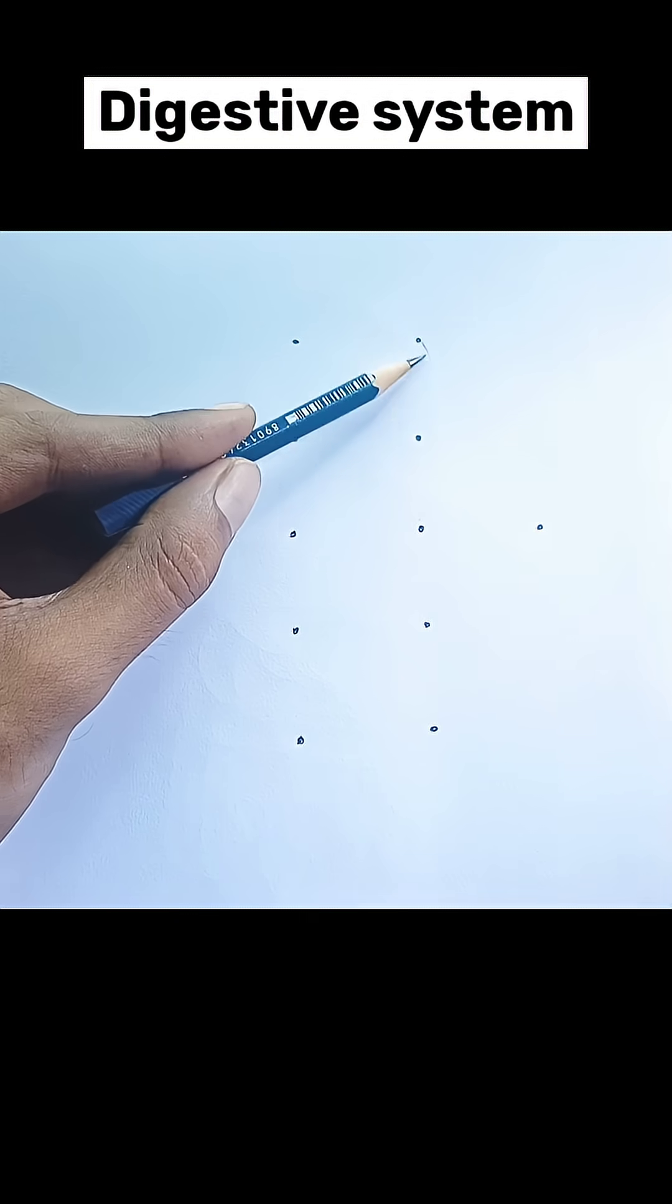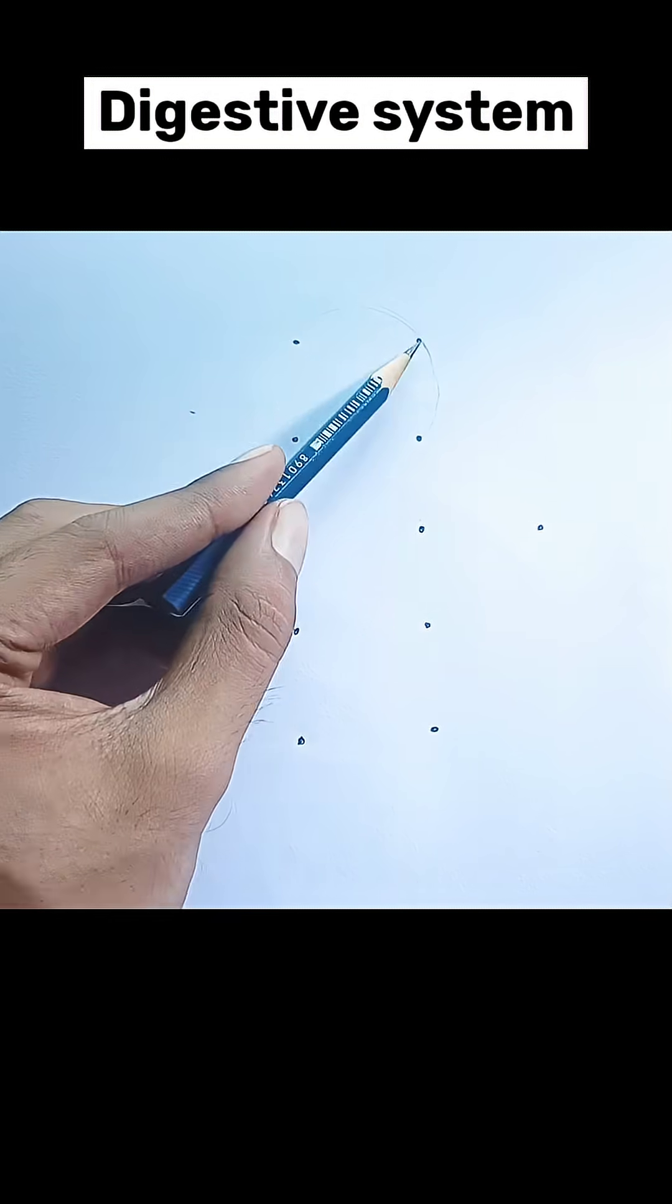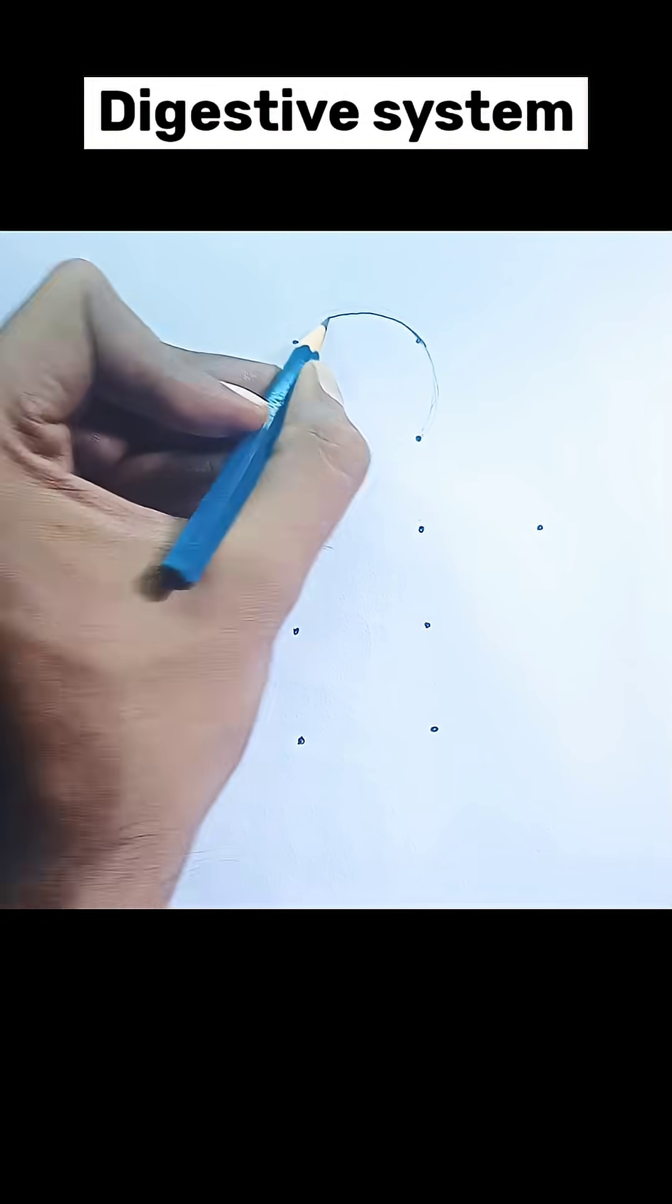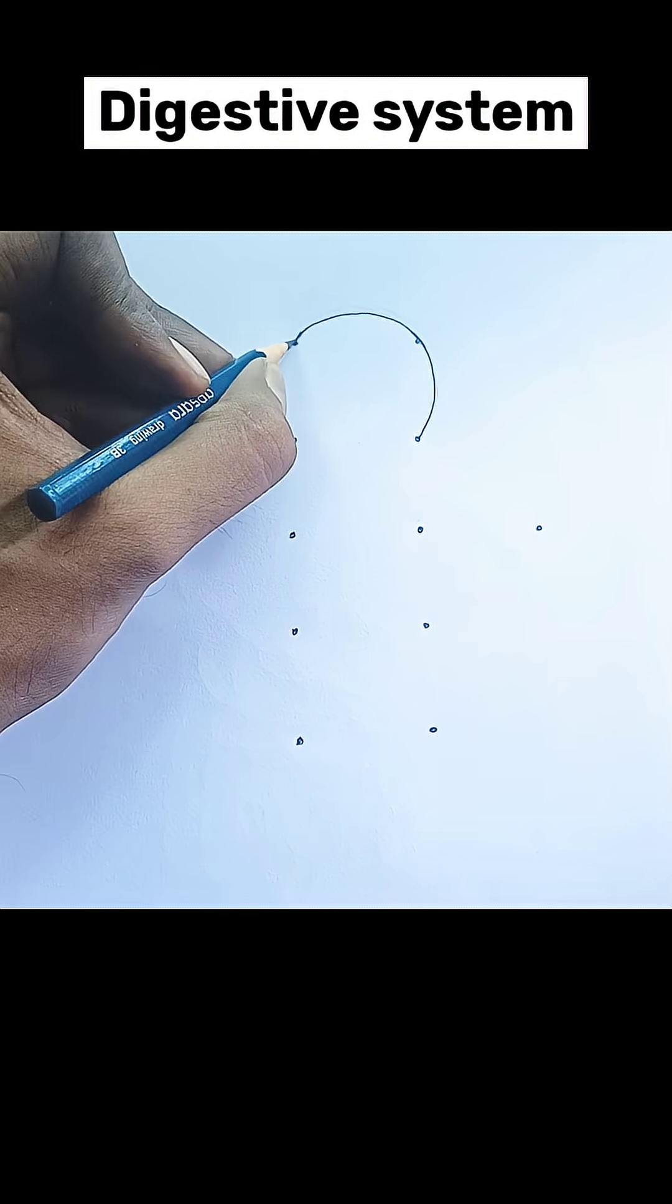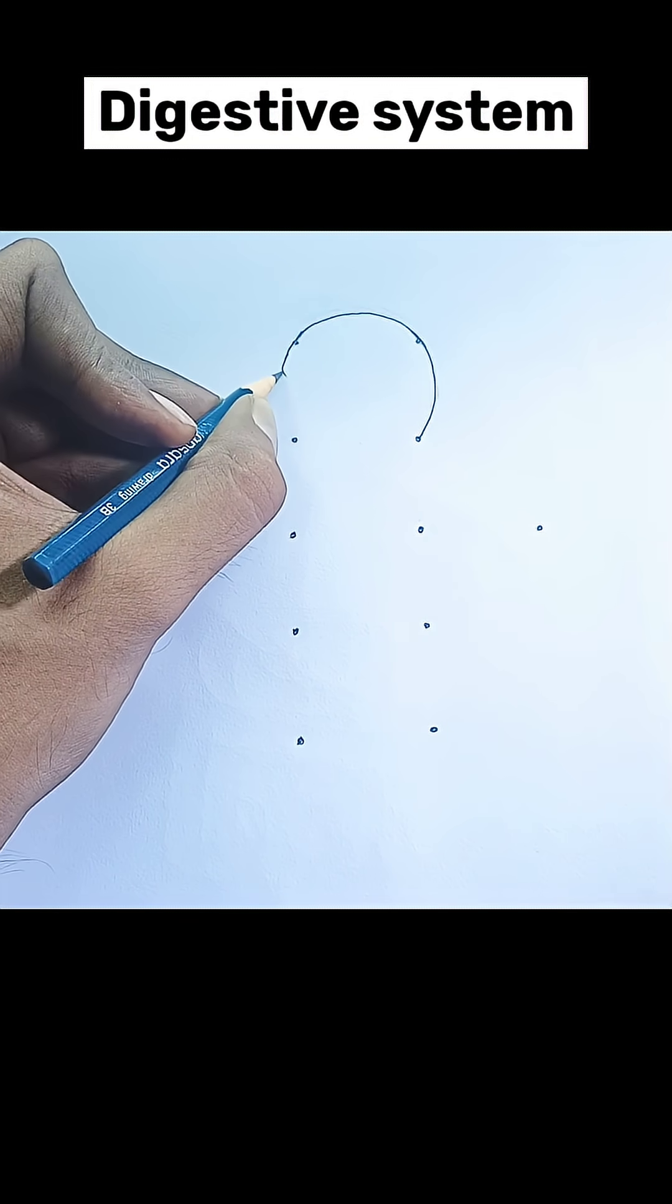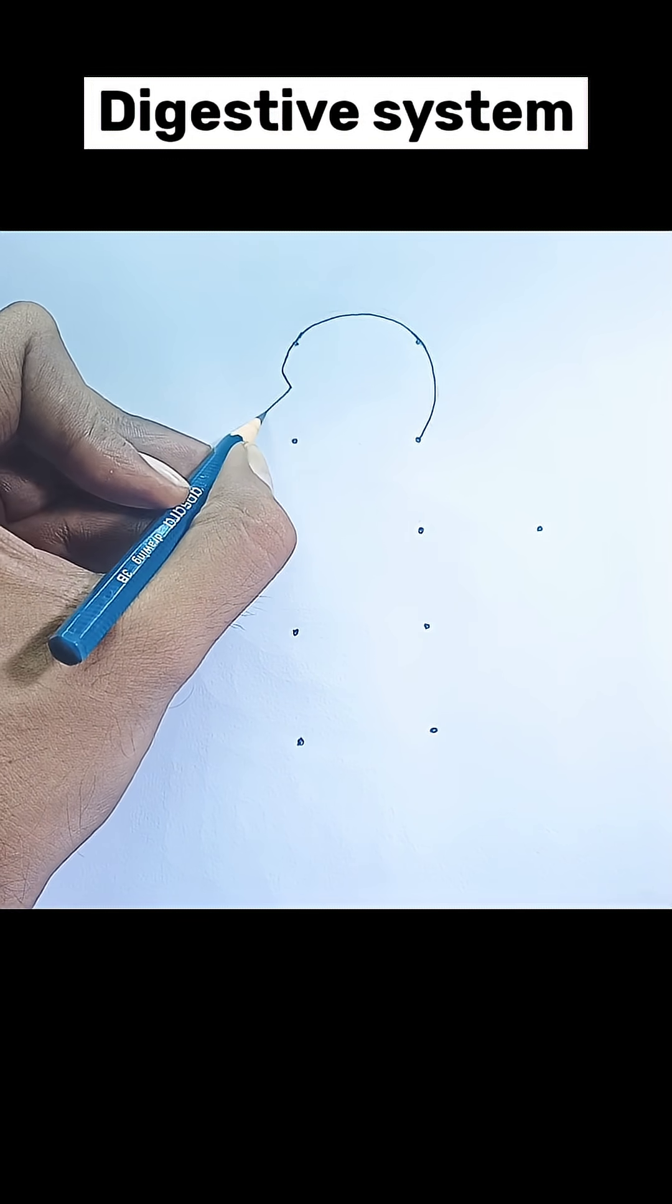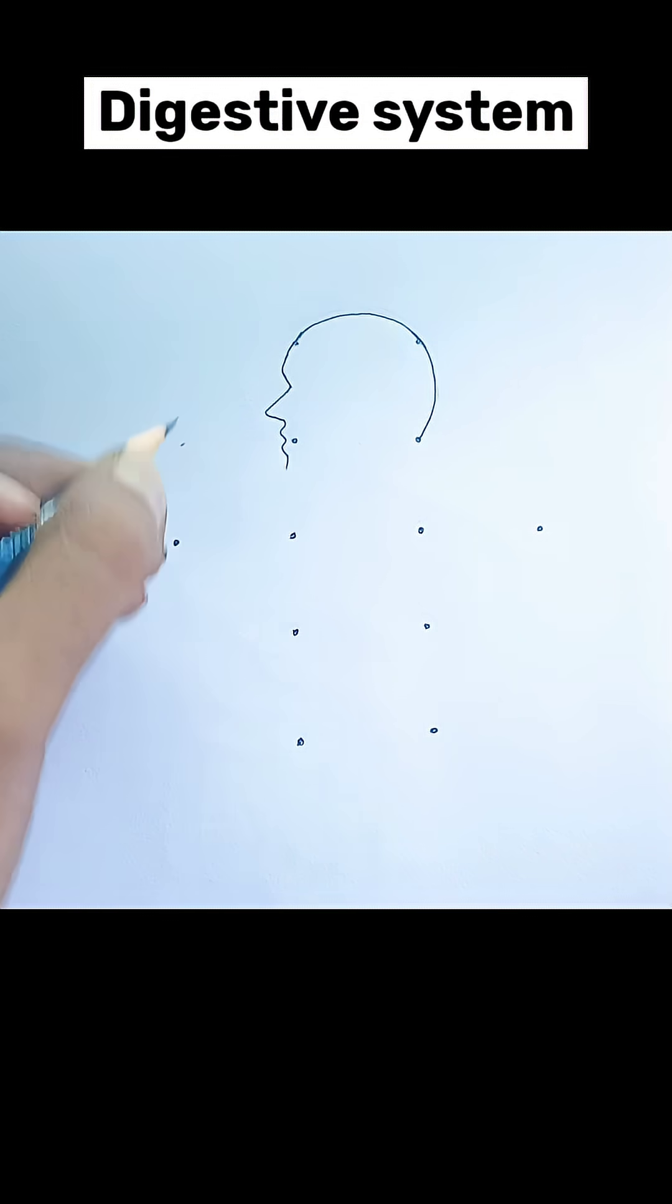This diagram illustrates the human digestive system, also known as the gastrointestinal (GI) tract. It shows the primary organs involved in the digestion and absorption of food and the elimination of waste. Here's a breakdown of the labeled parts and their general roles.